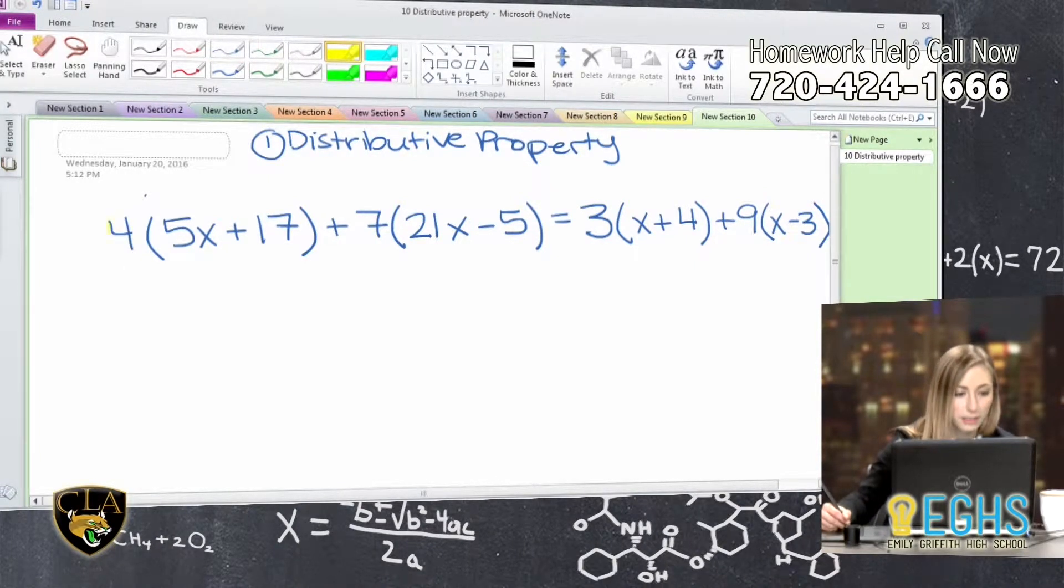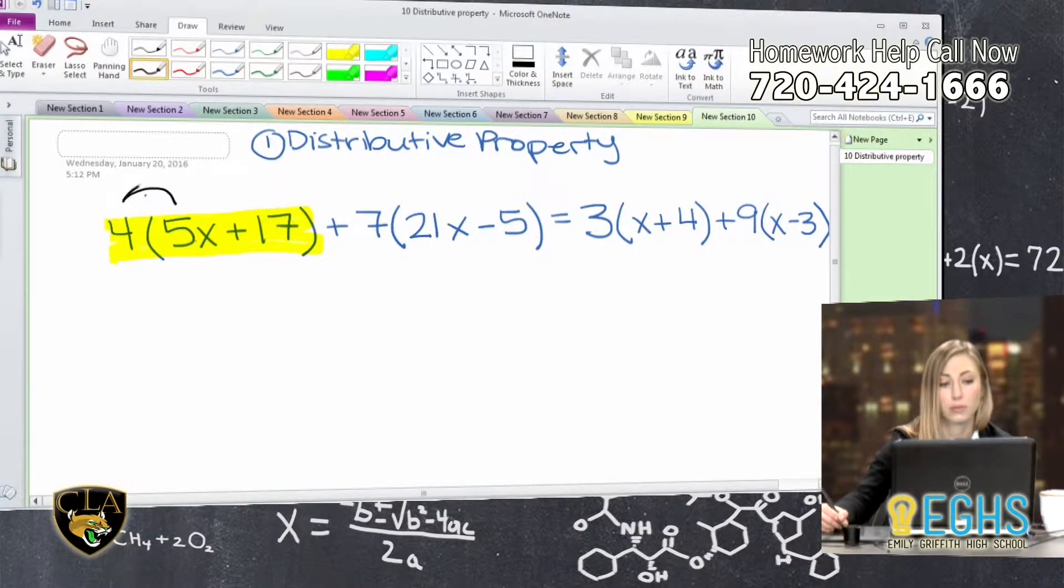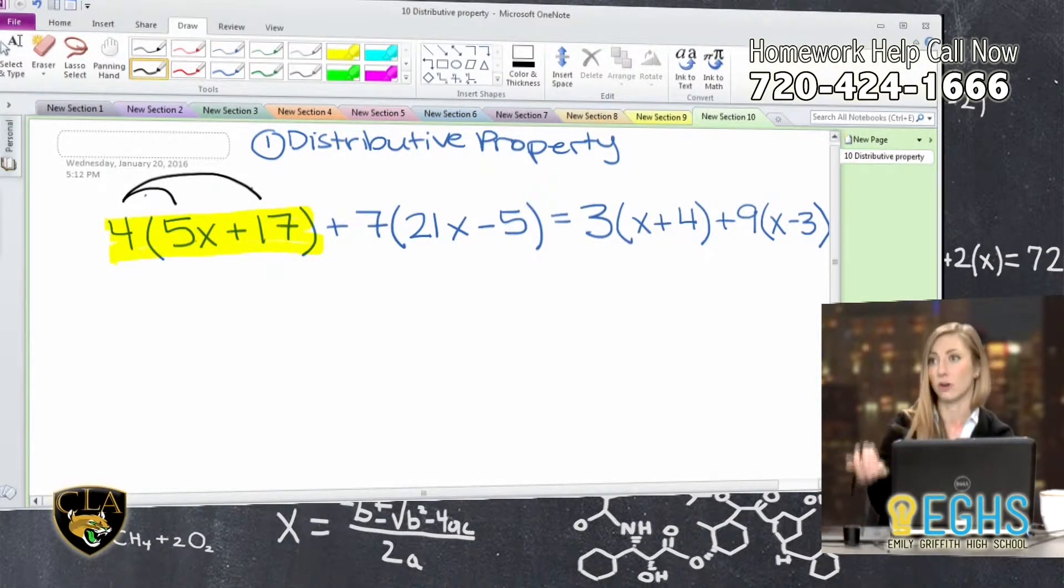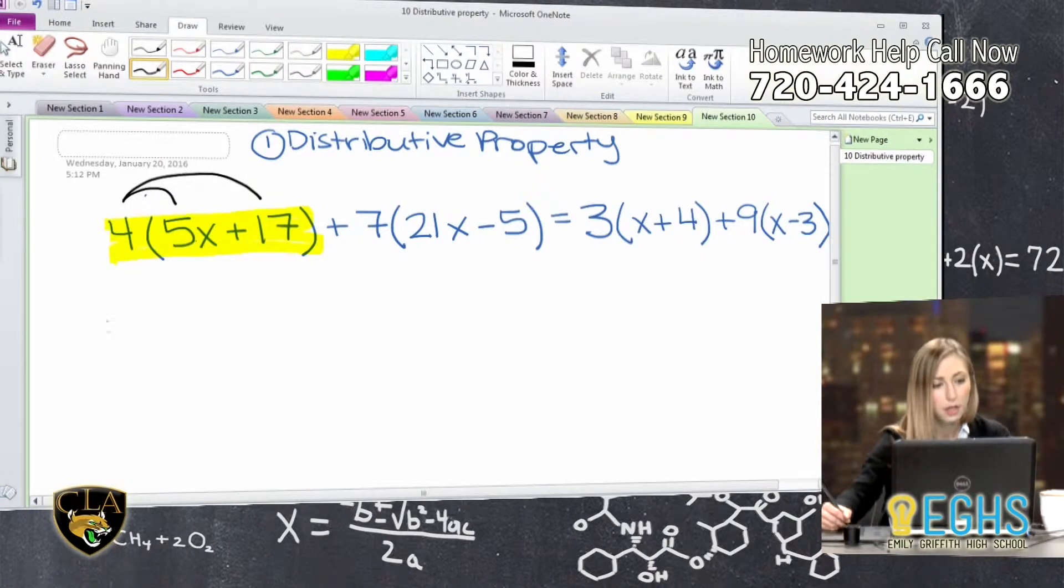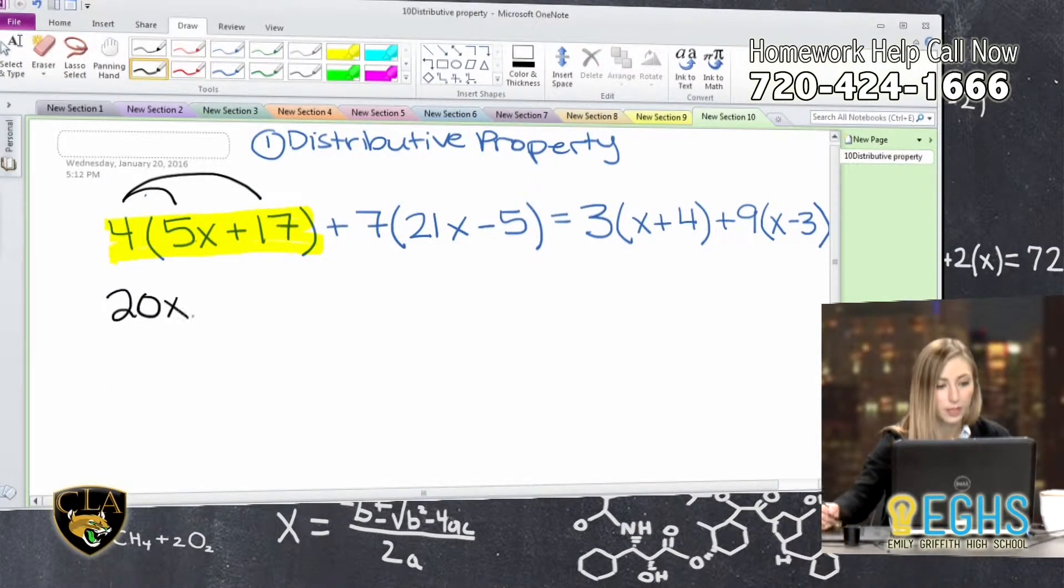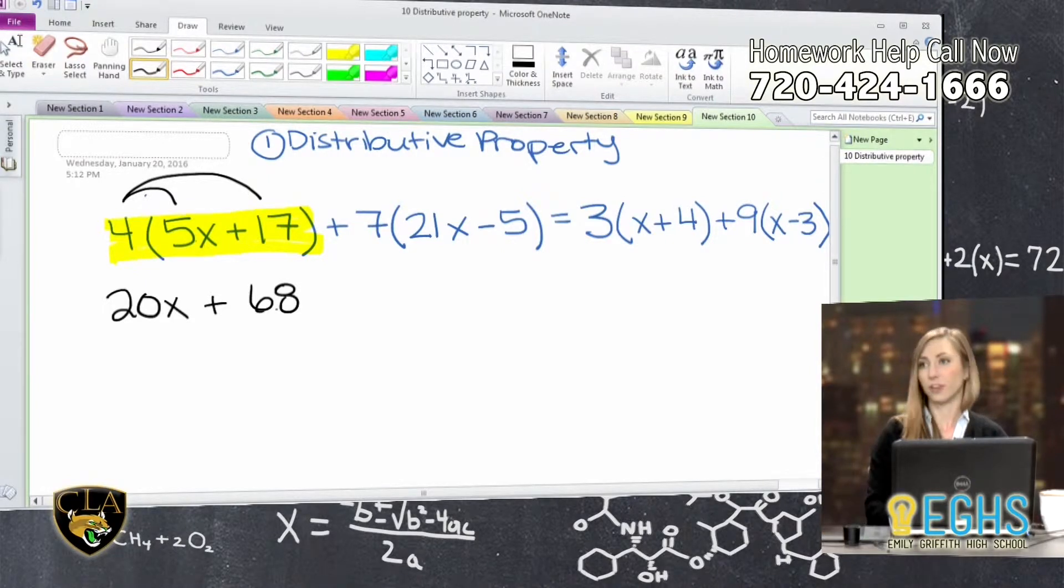So distributive property is this. This is an example of something where you would want to use the distributive property. And what we need to do is that we're saying that this is 4 times the quantity, because of the parentheses, of 5x plus 17. So we need to make sure that this 4 gets multiplied by the 5x and also by the 17. So we'll take 4 times 5x, we get 20x. Then we'll do 4 times 17, we get 68.